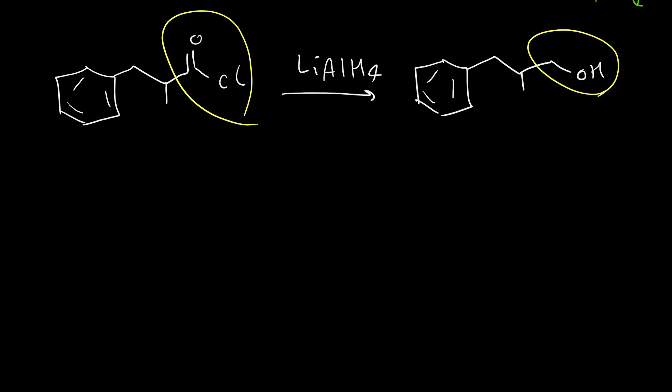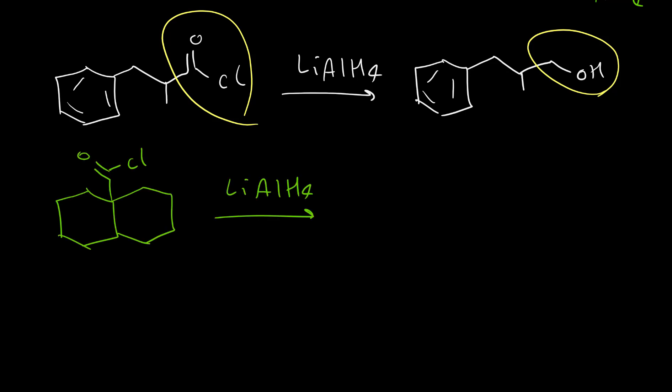Here are examples: with lithium aluminum hydride, the acid chloride functional group converts to a primary alcohol — CH₂OH. In another example, we again use LiAlH4 and simply convert the acid chloride functional group to CH₂OH primary alcohol.